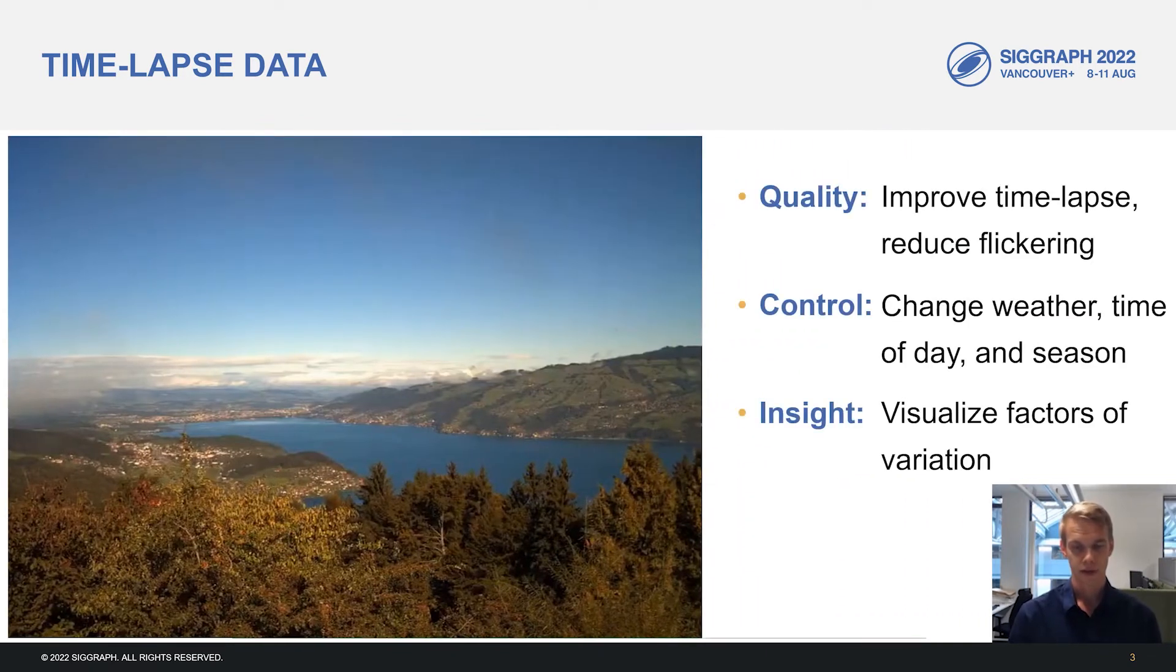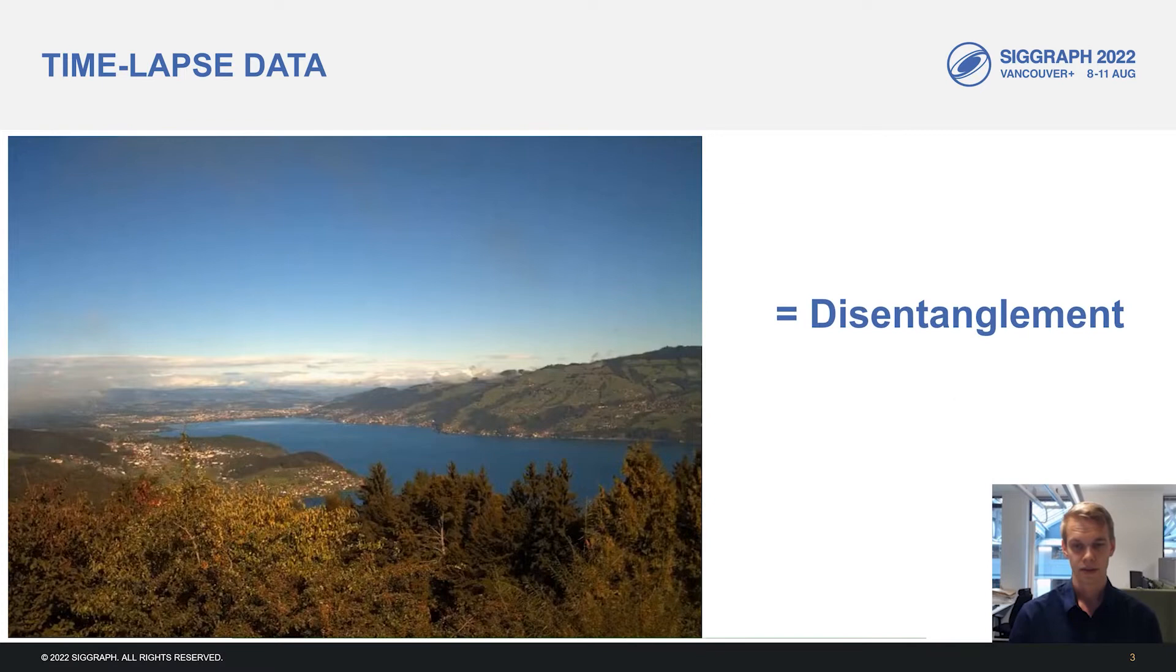The goals of this project are the following. We aim to improve the quality of the time-lapse. We want to reduce or remove the flickering seen before. We want control of the output. We want to be able to change the weather, the time of day and the season independently of each other. And finally, we want some insight about our data. We want to understand and visualize the factors of variation present in our input sequence. And all of this boils down to disentanglement of these changes that happen at the same time in the inputs.